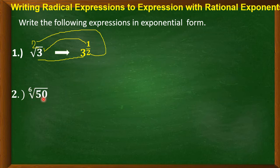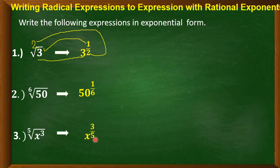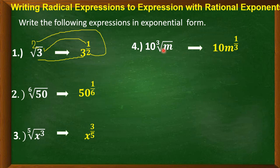Next: the 6th root of 50. We have 50, with index 6 becoming the denominator and 1 as the exponent numerator, giving 50 to the power of 1 over 6. Next: the 5th root of x cubed. So x has 3 as the numerator and 5 as the denominator, giving x to the power of 3 over 5. Another example: 10 times the cube root of m. This is written as 10 times m to the power of 1 third, because the exponent of m is 1 and the index is 3, making 3 the denominator of the fractional exponent.